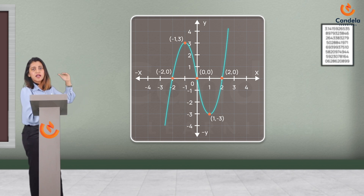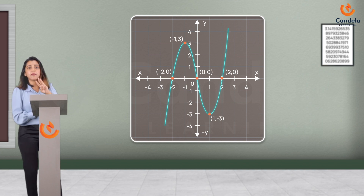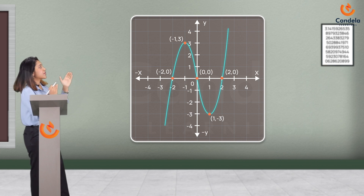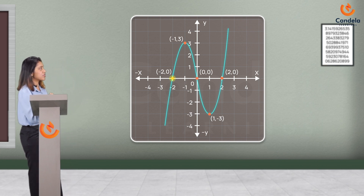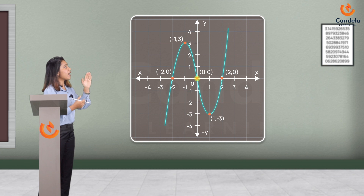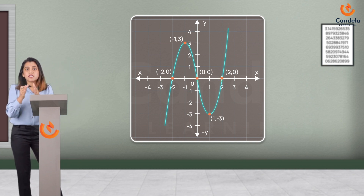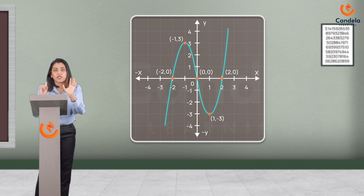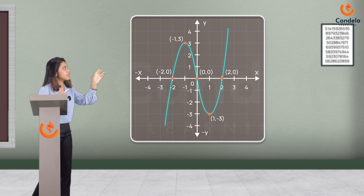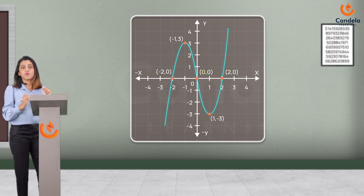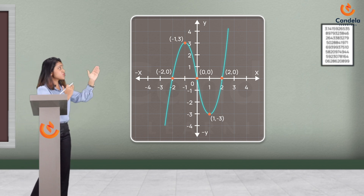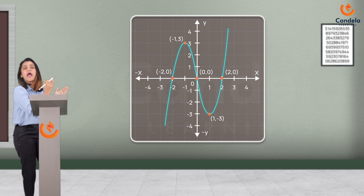This graph cuts the x-axis at 3 points, which means there are exactly 3 zeros. The points are (−2, 0), (0, 0), and (2, 0). The x-coordinate of each point is the zero of this polynomial. So the zeros are minus 2, 0, and 2. We got three zeros — they are the x-coordinates of the points where the graph cuts the x-axis.